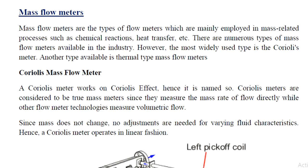The Coriolis mass flow meter operates based on the Coriolis effect. The Coriolis effect can be illustrated using the rotation of the Earth — in the northern hemisphere, the effect causes deflection of moving objects. That is the Coriolis effect as applied to flow meters.